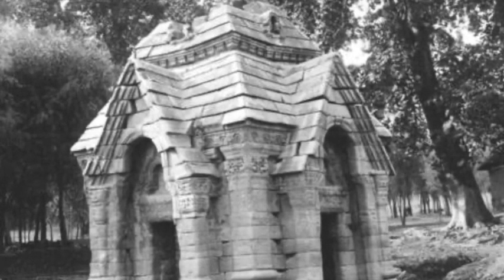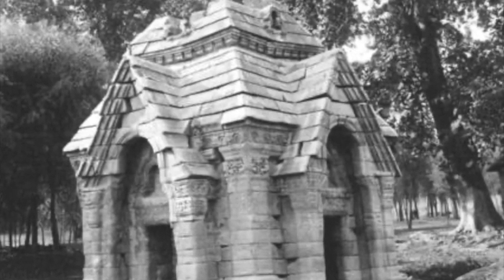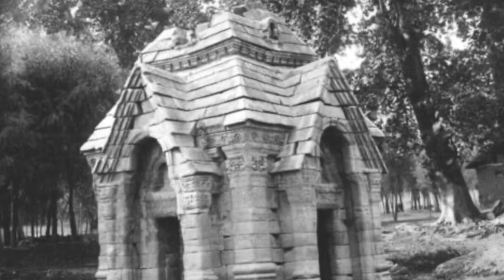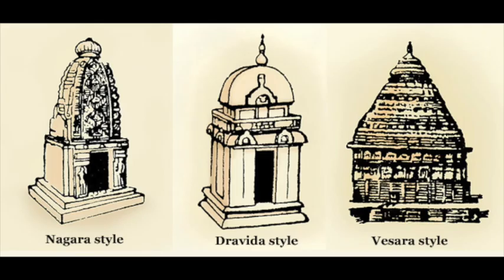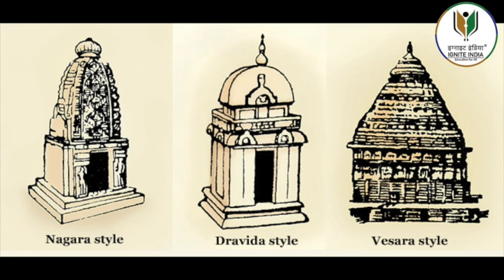The Karkota period of Kashmir is the most significant in terms of architecture. One of the most important temples is Pandretan, built during the 8th and 9th centuries. In keeping with the tradition of a water tank attached to the shrine, this temple is built on a plinth in the middle of a tank.